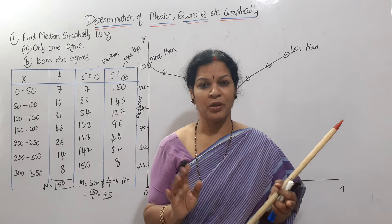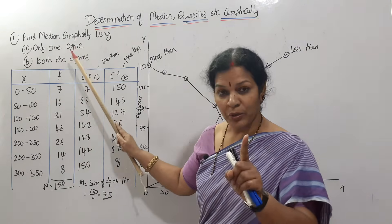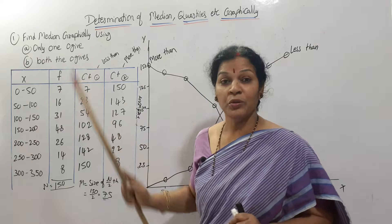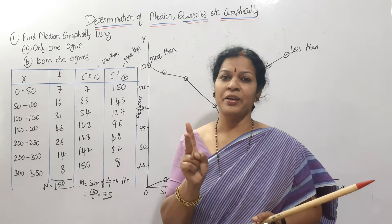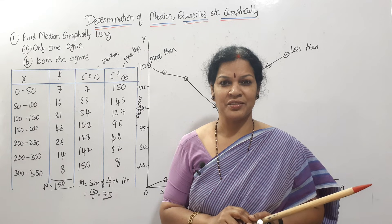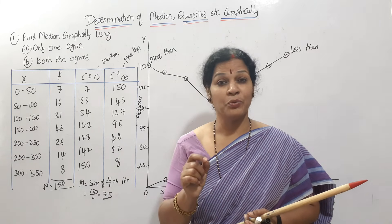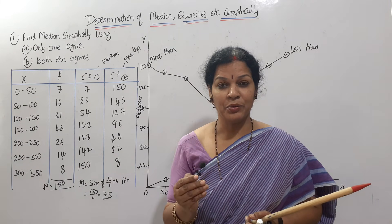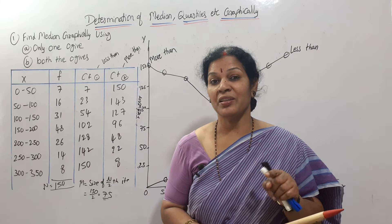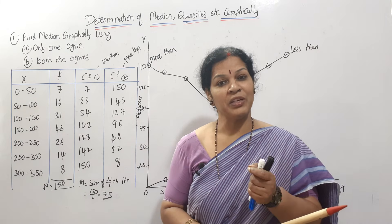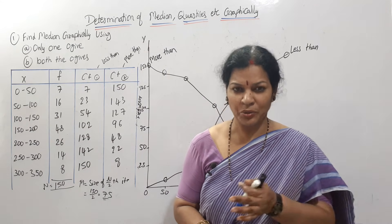I'll explain through a problem. The first problem is to find the median graphically using only one ogive. The second uses both ogives — less than and more than — as we saw in previous classes. When data is given as less than or more than, the frequency won't be normal; we have to arrange it either ascending or descending. Ascending order means less than; descending order means more than.